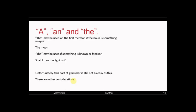The. It may be used on first mention if the noun is something unique. It may be used all the time if something is unique. The moon, for example. There are other moons in the solar system, I know, but with this planet we have the moon. There is one. The can also be used if something is known or familiar. If you wake up in the morning, shall I turn the light on? It's not our light. It's the light. It's possibly the one next to your bed. Shall I turn the light on? It's known, it's familiar. Unfortunately, this part of grammar is still not quite as easy as the things we've looked at. There are other things to consider, other considerations to take into account. So let's dive a little deeper into articles.